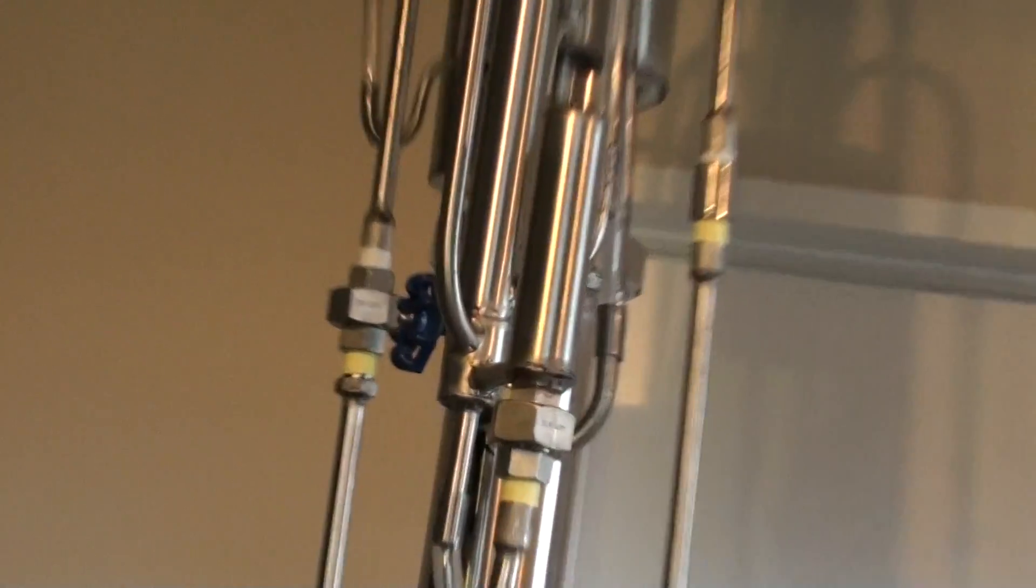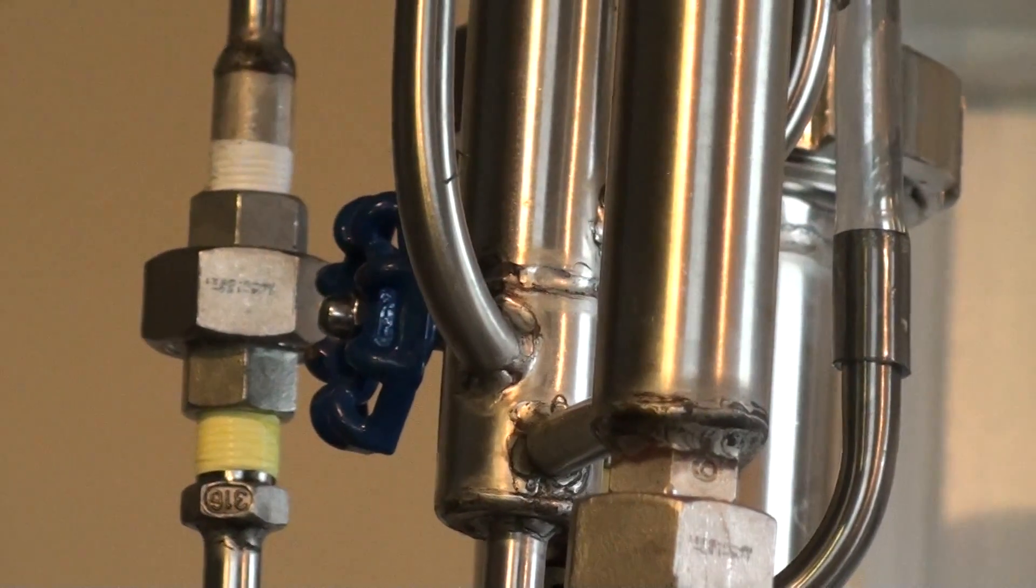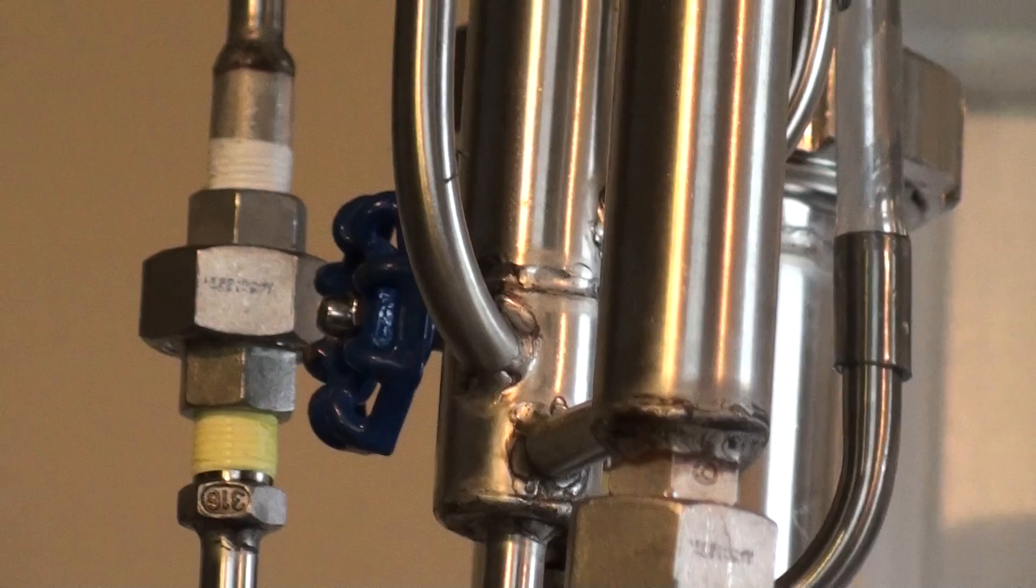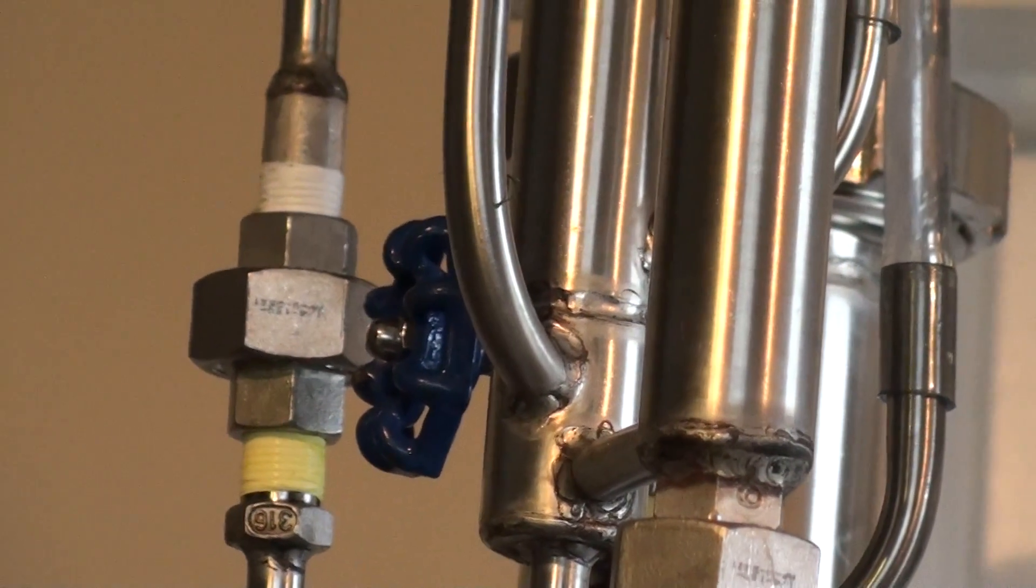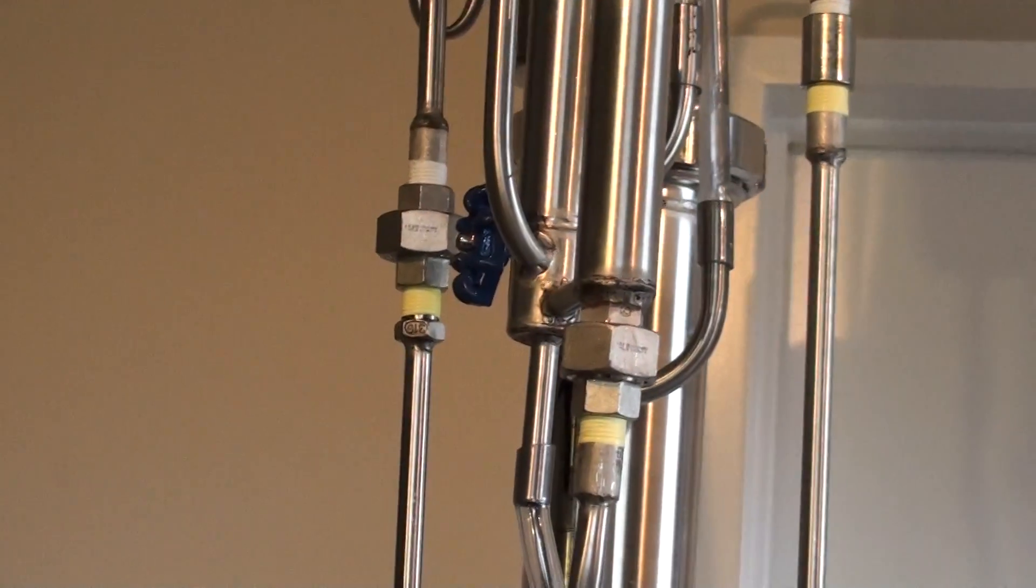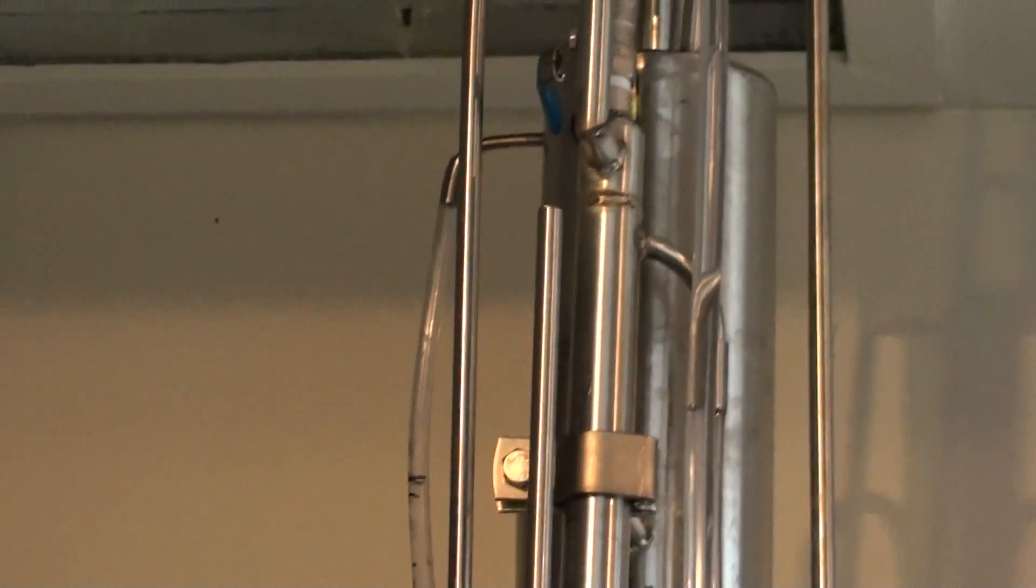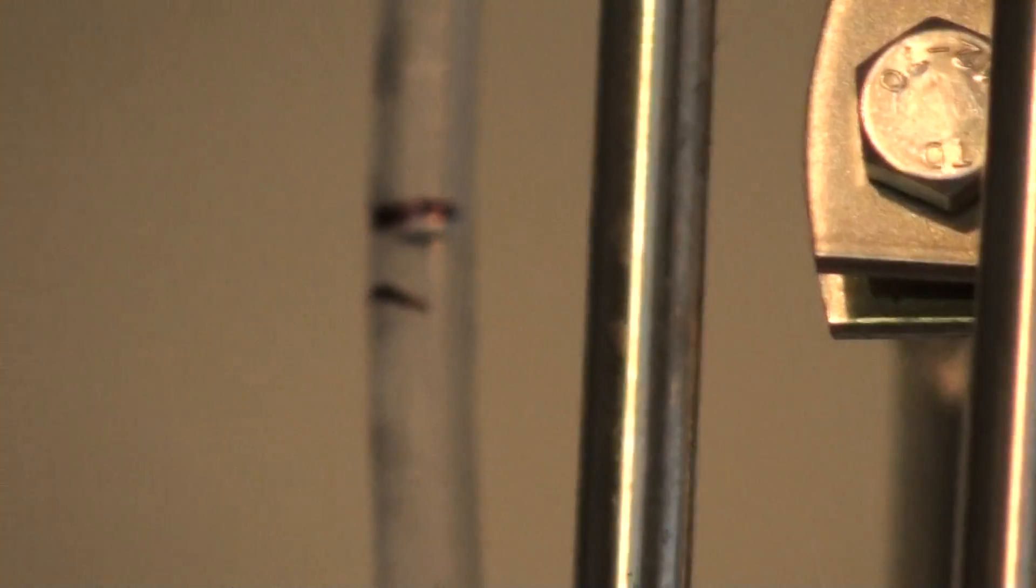Here's a reflux valve, so we're controlling the reflux and the spirit flow. The more the flow, the less percentage, less reflux. Less flow, higher percentage. Just what you like, you know: 80 percent, 75, 90. Here we've got level of the spirit within the still's head.